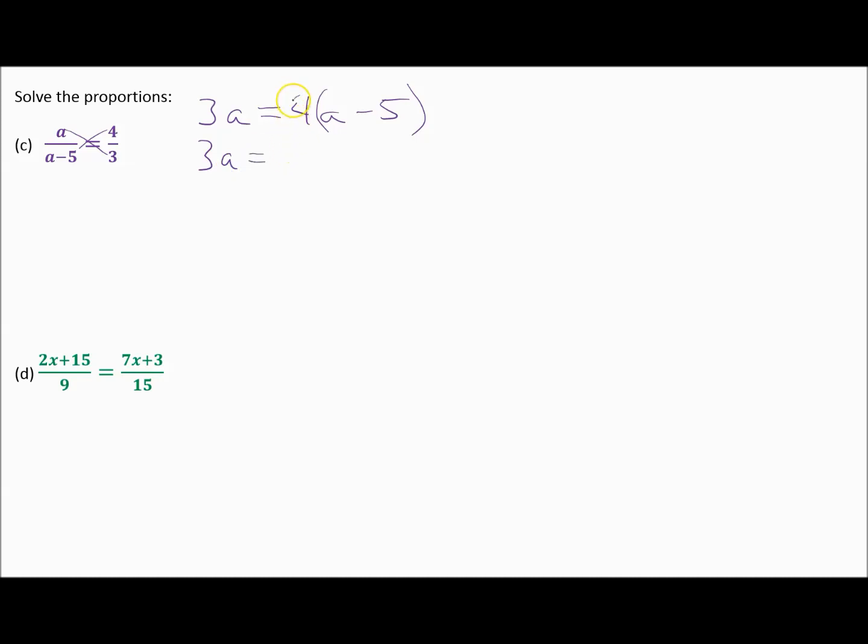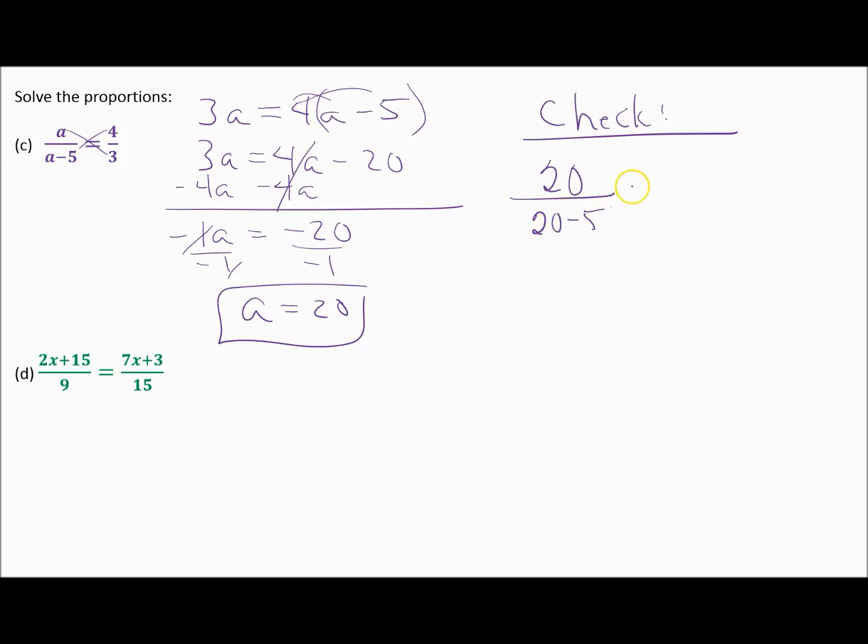So I have 3a is equal to, now I use the distributive property, that's 4a minus 20. Now the goal is to solve for a. Since I already have a constant on the right-hand side, let's subtract our 4a and get it on the left-hand side of this equation. So now I have negative 1a equals negative 20. To solve for a, I'm going to divide both sides by negative 1. And so a equals 20. How could I check it? Take that 20 and plug it back in. Is 20 divided by 20 minus 5 really equal to 4 thirds? That's going to be 20 over 15, and 20 over 15 reduces by 5 and does give us 4 thirds. So this checks out.